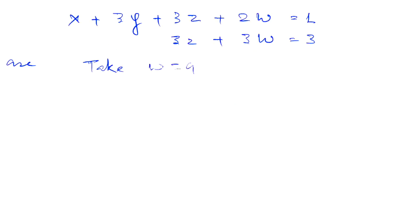Now we can take any value for y and w. Start with w. We take w equal to any number a. Then we can write, using the second equation, z equal to 1 minus a. So we got two solutions: w equal to a and z equal to 1 minus a.